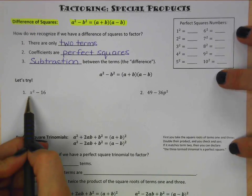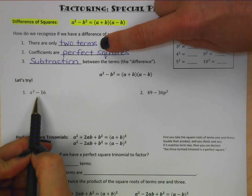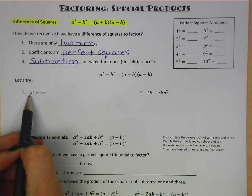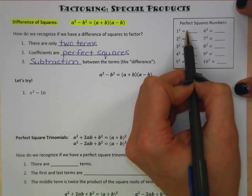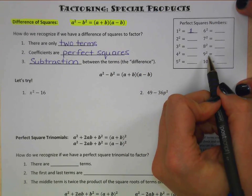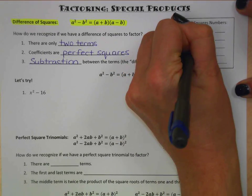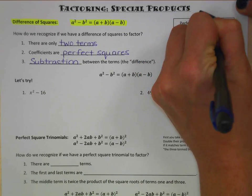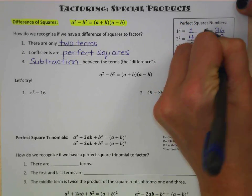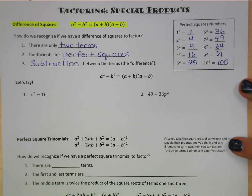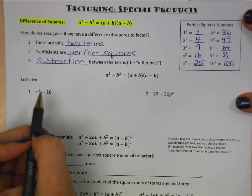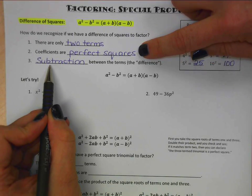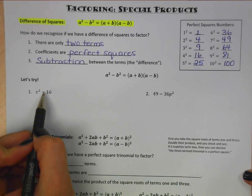Let's try it. In this first one we have x squared minus 16. First, there are definitely two terms. Now we need to check that the coefficients are perfect squares. The coefficient of x is just 1 — if we don't see it, it's a 1. So 1 is a perfect square. 16: 4 times 4 is 16, so that is a perfect square. And finally, yes, there is a subtraction between them. So this is a question asking us to factor a difference of squares.